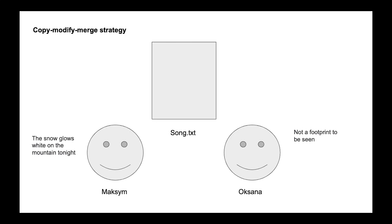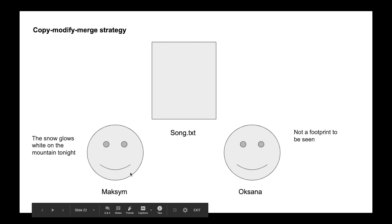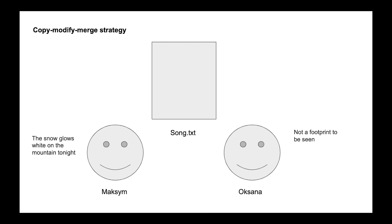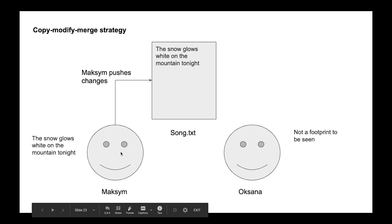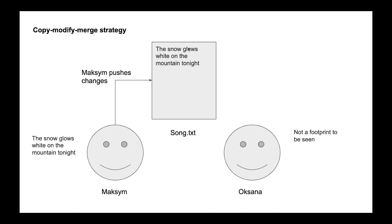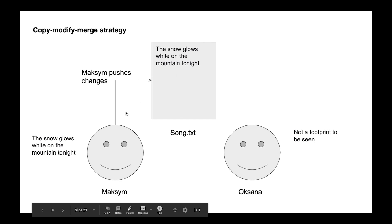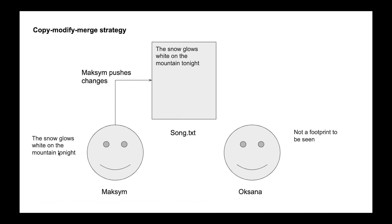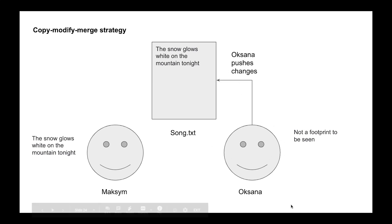In copy-modify-merge we have the same program — our song — and two developers working on their own versions simultaneously. Maxim finishes first and decides to commit: he pushes to the server. The server compares his file with the original version zero, which was an empty file. Since both were the same empty file, the server accepts his changes and now has the latest version of the song.